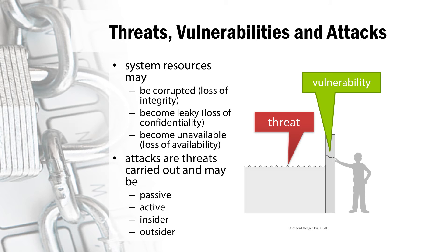Data and services have many threats and vulnerabilities and are prone to attacks if the CIA triad is not sufficiently managed. System resources could become corrupted, causing a loss of integrity. They can become leaky, causing a loss of confidentiality. And they can also become unavailable, causing a loss of availability. Attacks are threats carried out, and may be passive, active, insider, and outsider attacks.